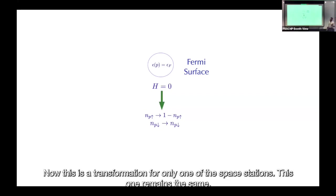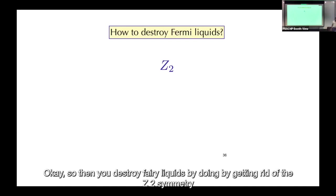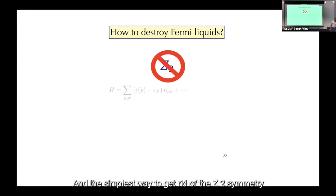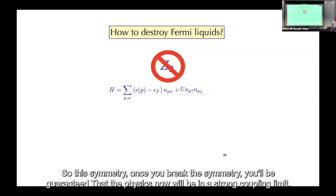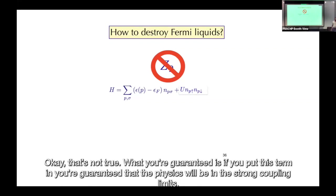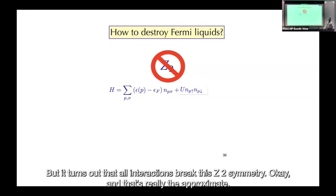This transformation applies to only one spin species; the other remains the same. You destroy Fermi liquids by breaking the Z_2 symmetry. The simplest way is by adding the specific interaction term commented on yesterday. But all interactions break this Z_2 symmetry — that's the crux of it. This particular interaction is odd under Z_2.